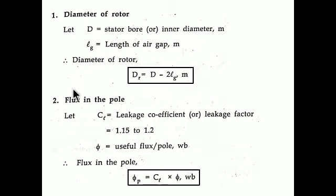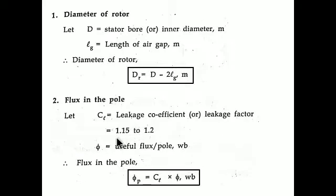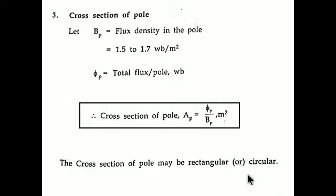The second step is flux in the pole, denoted φp. It is defined as the product of two things: the leakage coefficient Cl and the useful flux per pole φ. The leakage coefficient Cl, also called the leakage factor, is an assumed value lying between 1.15 to 1.2. The useful flux φ is in webers. So φp = Cl × φ gives us the flux in the pole.